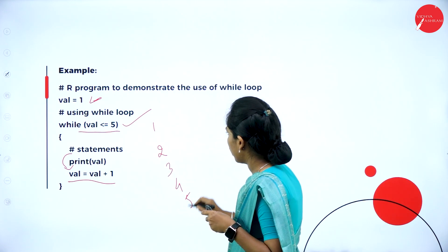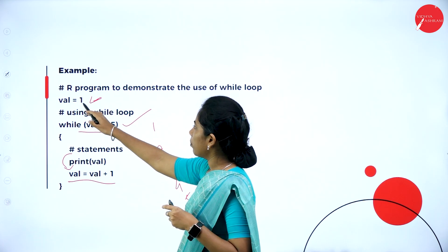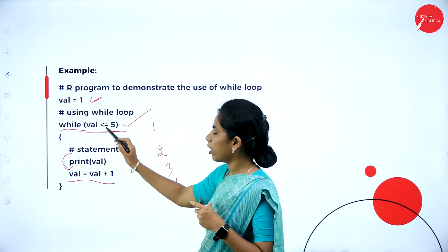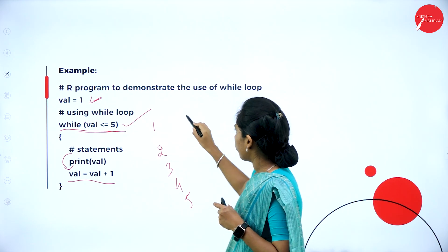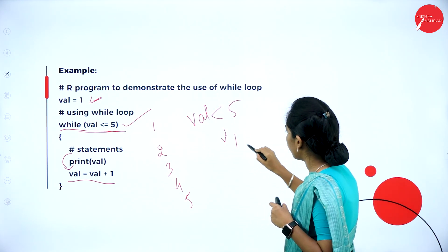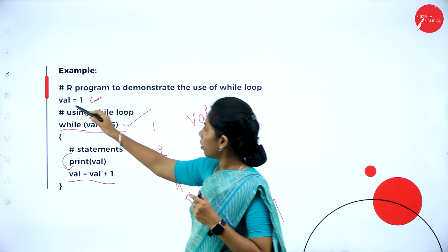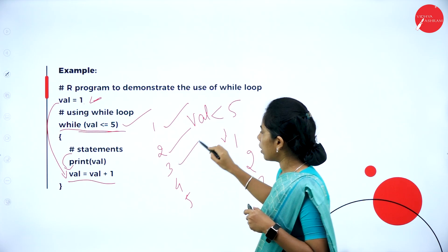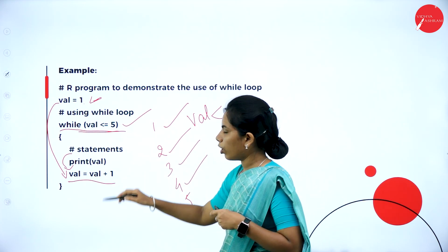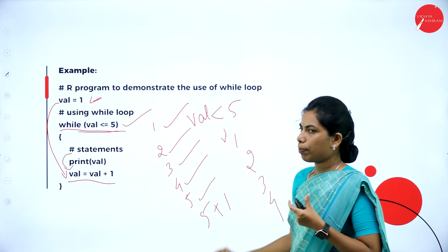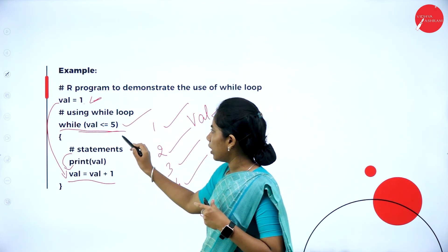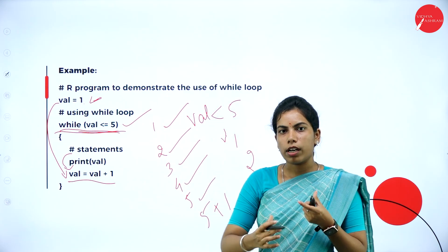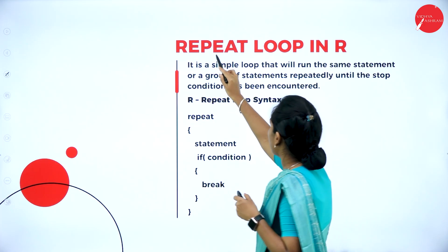In the while loop example, it prints 1, 2, 3, 4, 5 because value starts at 1 and increments: 1+1=2, 2+1=3, 3+1=4, 4+1=5, and 5+1=6. Since the condition is value <= 5, when value becomes 6 it does not generate further output. That is how the while loop stops when the condition becomes false and exits the loop.